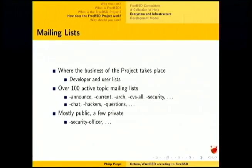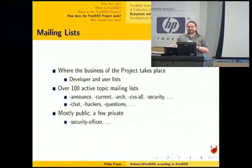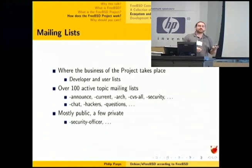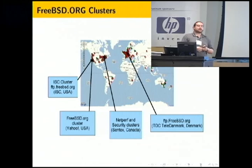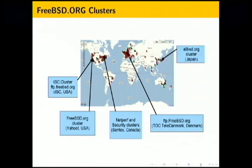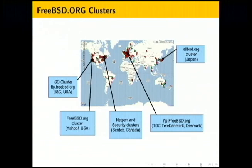We have lots of mailing lists, each with their own special variety of flame war. Most are public, some are private — the security officer list is obviously private, so that if we find a remote kernel vulnerability we can announce it in a responsible way. We have machines everywhere — two clusters on the left side of the US sitting on top of an inconvenient fault, and recently a data center being worked out on the other side of the US. We also have a cluster in Denmark and some hardware in the Netherlands.